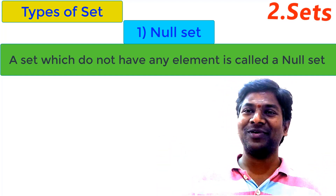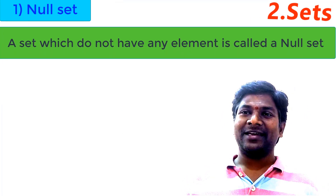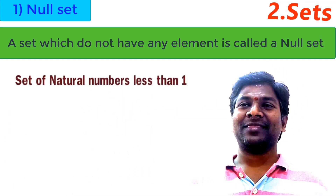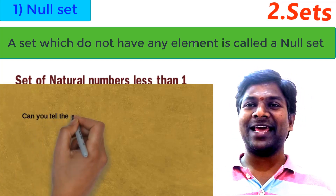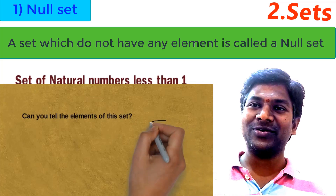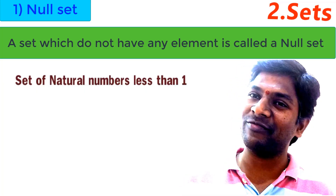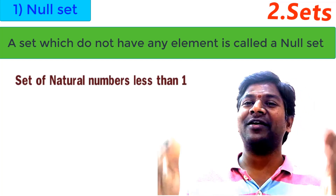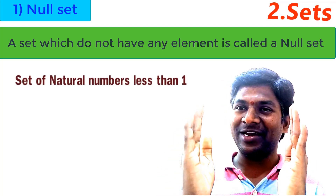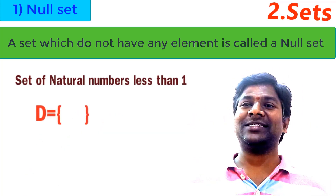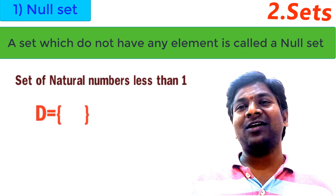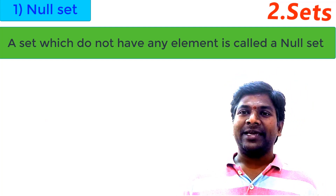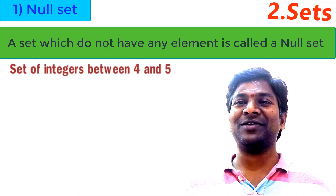Can anybody say an example for null set? See, set of natural numbers which are less than one. Can you say the elements in this set? Natural numbers are started from one, so when we try to write the natural numbers less than one, we can't write anything. We are not finding any elements, so it is an example for empty set — set of natural numbers less than one is an empty set.